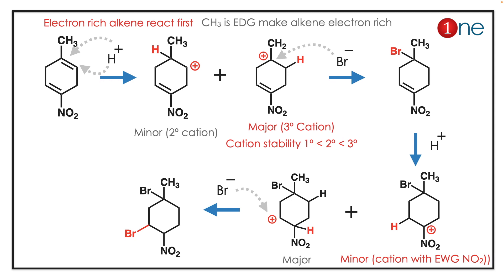Then H⁺ attacks again, because you are using two equivalents. There are two possibilities, but the carbocation will not form near the NO₂ group because NO₂ is electron-withdrawing, making that cation unstable. So the other position will be the major one. Then Br⁻ attacks, giving the final product — a dibromo compound attached to the system.